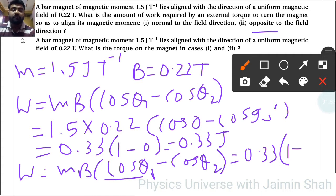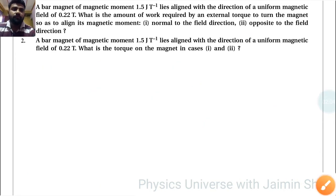So cos 180 is -1, so 1 - (-1) is 2, so 0.33 × 2, so that is 0.66 joules. So these are the two work done. Now second question.